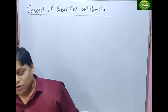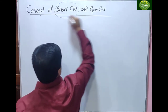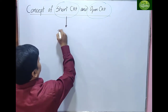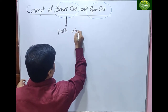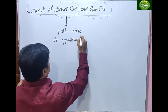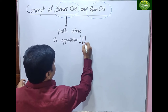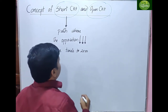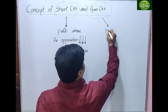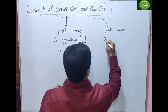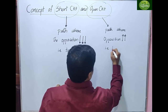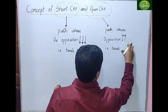Basically, short circuit and open circuit are defined as follows. A short circuit is a path where opposition tends to zero — that means the opposition is very less. In case of the open circuit, it is a path where the opposition is very very high, tending to infinite.